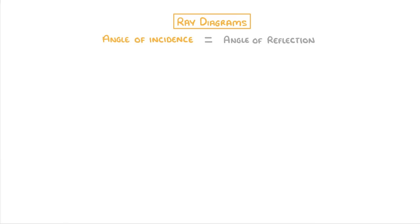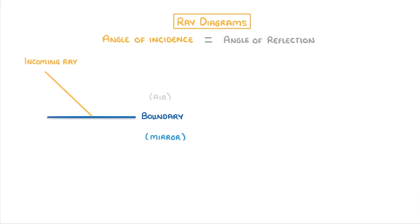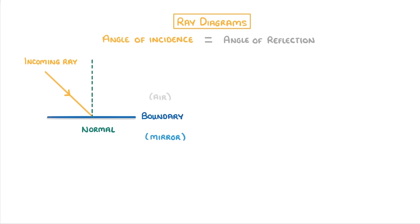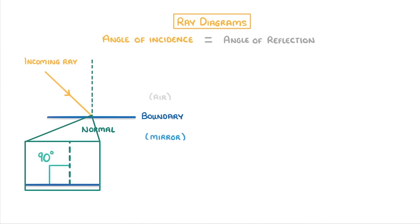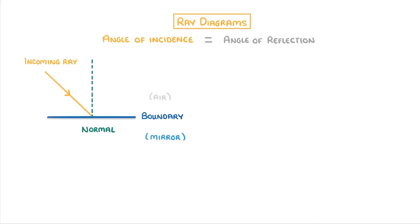To draw a ray diagram, we normally start at the bottom with the boundary between the two materials. For example, this area above could be the air, and this area below could be a mirror, so our boundary is effectively the surface of the mirror. Next, we draw our incoming ray of light, and you should add an arrow to show that it's coming down towards the mirror. At this point we could draw our reflected ray, but the problem is that we can't be sure exactly what angle to draw it at, so instead we have to draw the normal first. The normal is a dashed line that's perpendicular, so exactly 90 degrees, from the surface. And once we have the normal, we can measure the angle of incidence, which is the angle between the incoming ray and the normal.